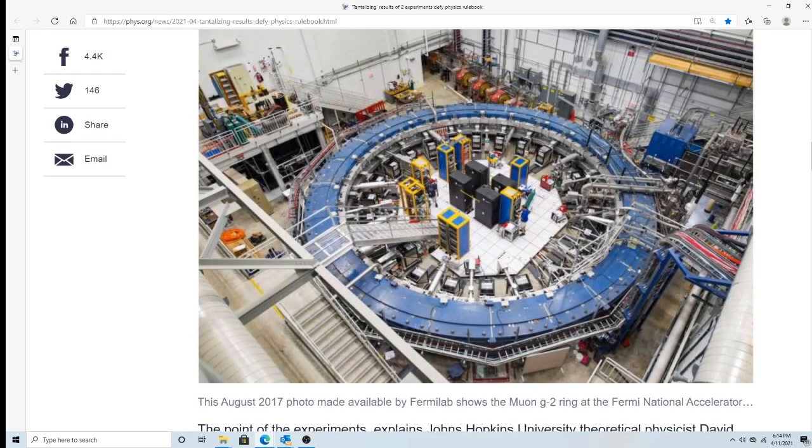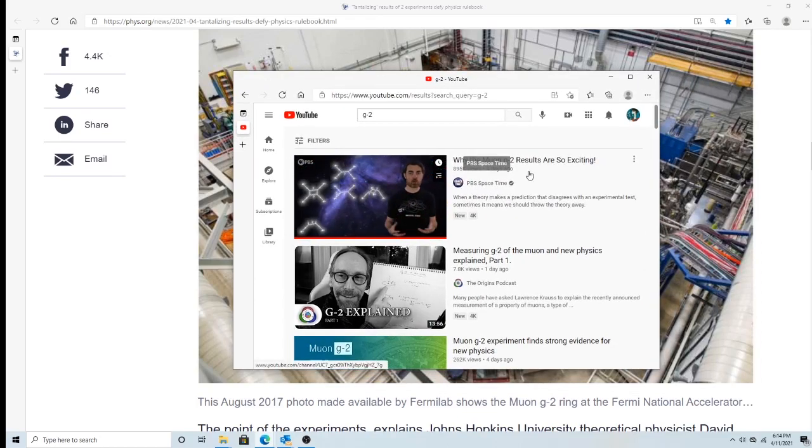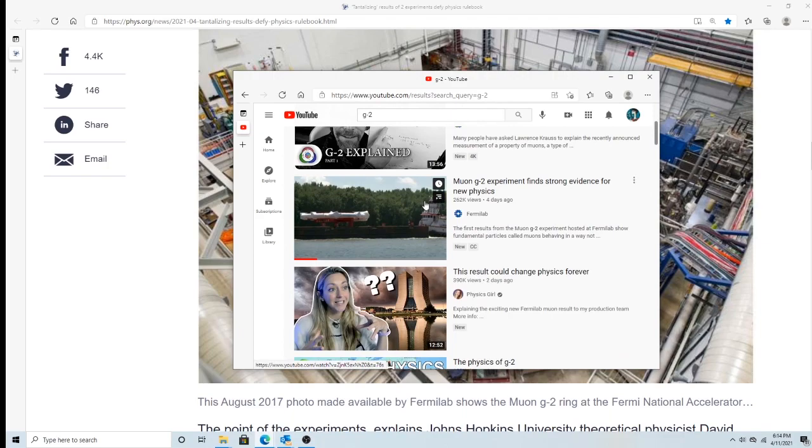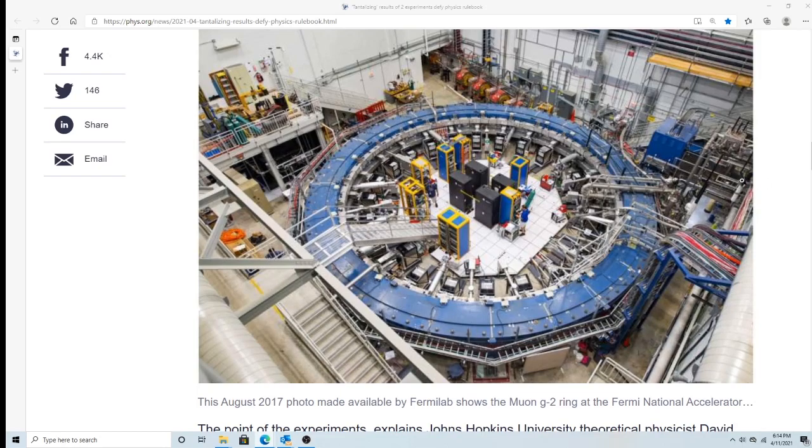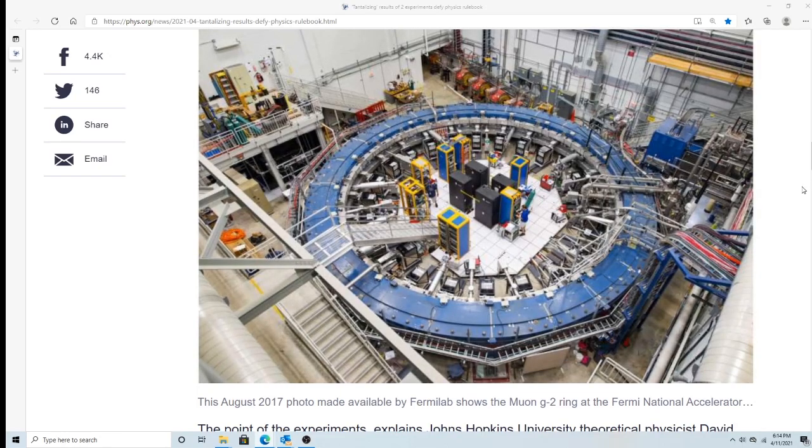If you want to see a good video that describes this, go to the PBS space-time G2 results. That's the better video. Don't go to the Fermilab one. This thing is horribly written, it doesn't explain half of the graphs they show you. Let's go to the derivation right now.